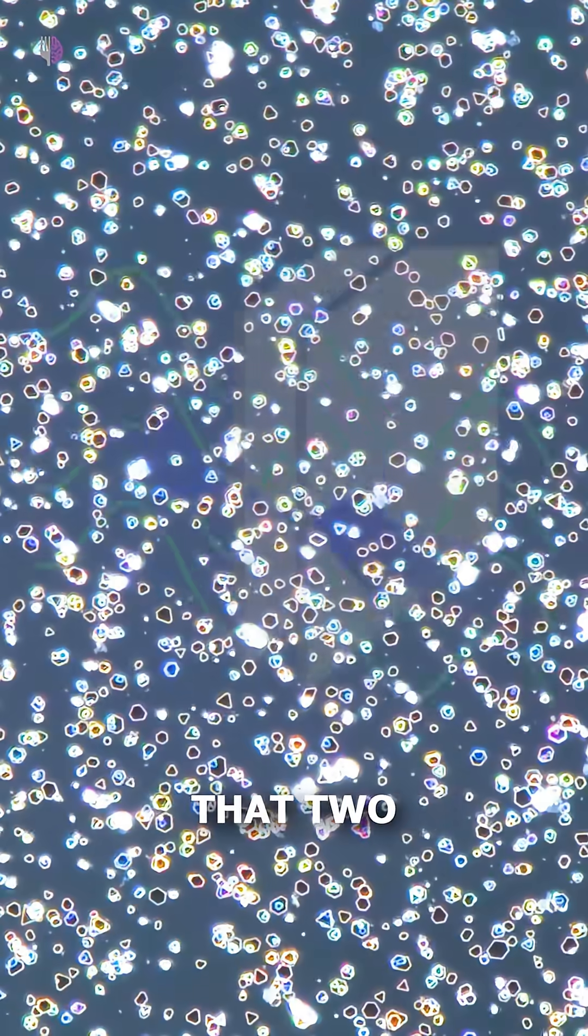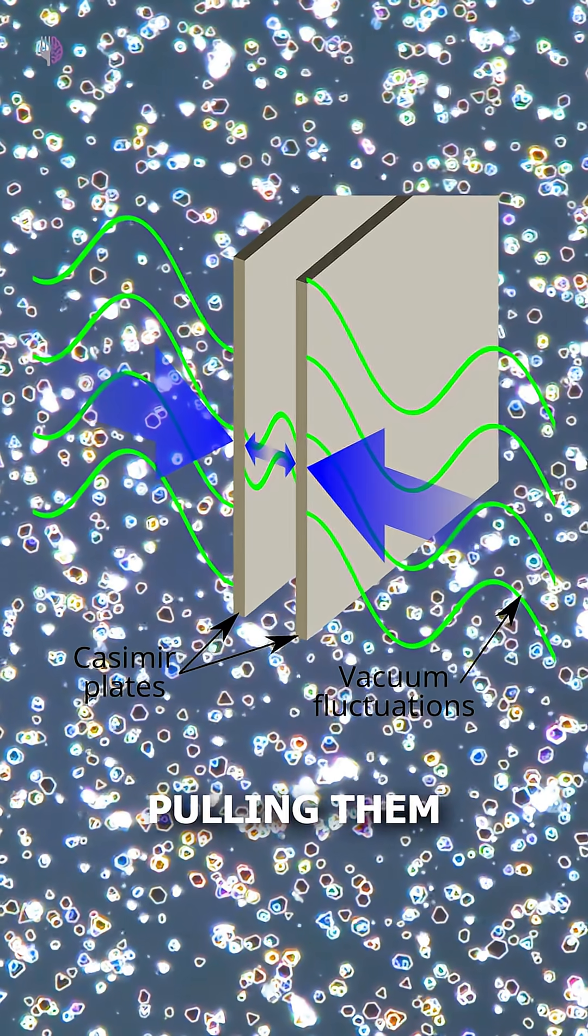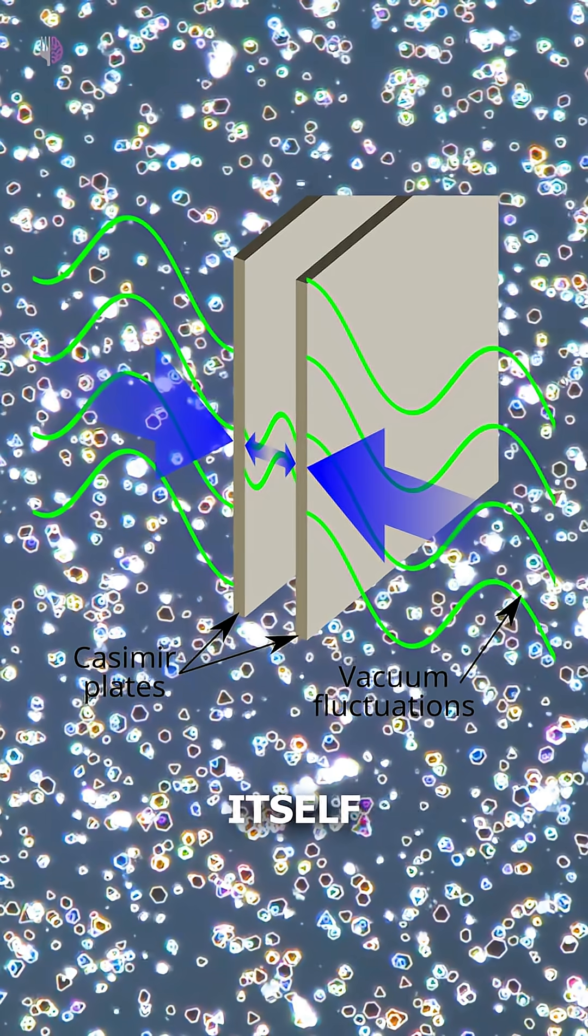The Casimir effect proves that two metal plates placed close together in a vacuum will feel a tiny force pulling them together because the vacuum itself is pushing.